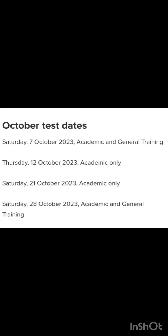Subscribe to my channel. October IDP test dates: the first test is Saturday 7 October 2023, academic and general training. The second test in October is Thursday 12 October 2023, academic only. The third test is Saturday 21 October 2023, academic only.